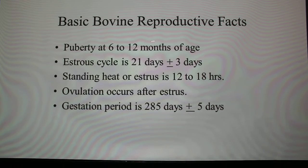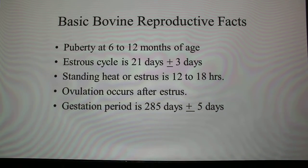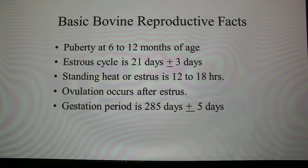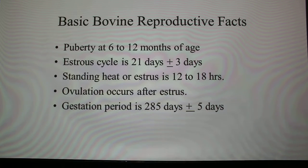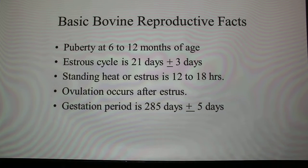Some key facts: puberty occurs at six to twelve months of age, the estrous cycle is 21 days, and standing heat is very short — less than a day for beef or dairy cows. Compare that to horses, which are in heat five or six days. One important point: a cow comes into heat, goes out of heat, and then after she goes out she ovulates. So if you're doing AI right when she's coming into heat, that's not a good fertile time — it's too far before ovulation.